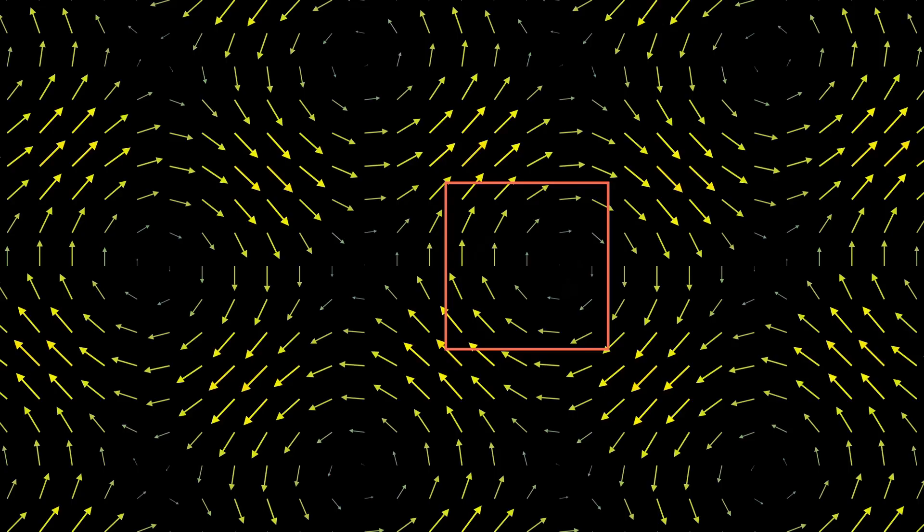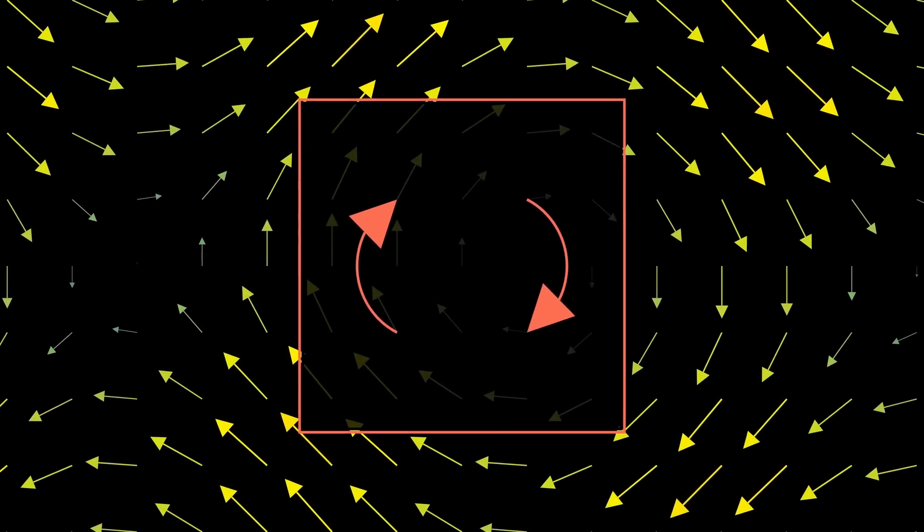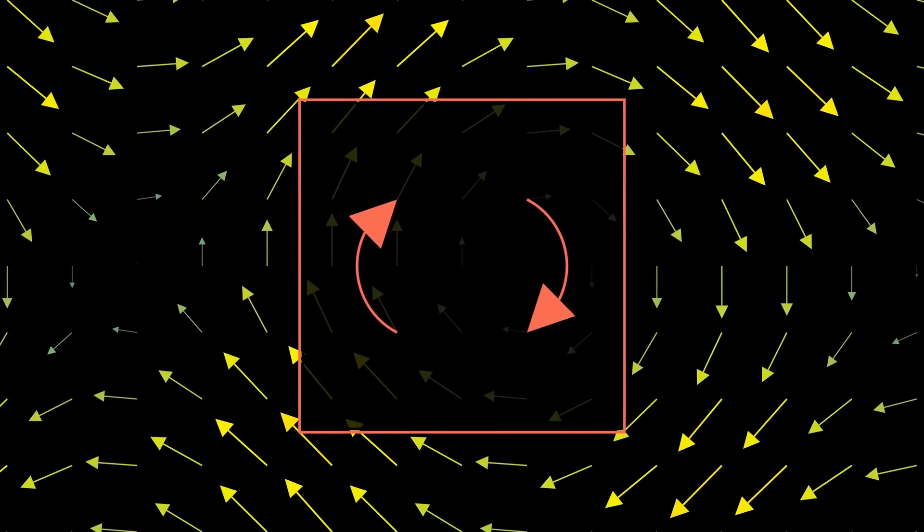Imagine that we now section off a portion of this water with a very fine membrane so that the water can still move through it without affecting its speed. Sometimes, it is useful for us to know the total sum of all the curl inside this shape we've sectioned off. You can think of this as sort of how much this entire area would spin. How do we do this?